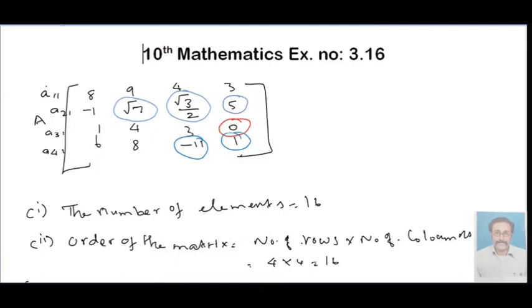We need to find the number of elements and the order of the matrix. The elements corresponding to A22, A23, and A24.